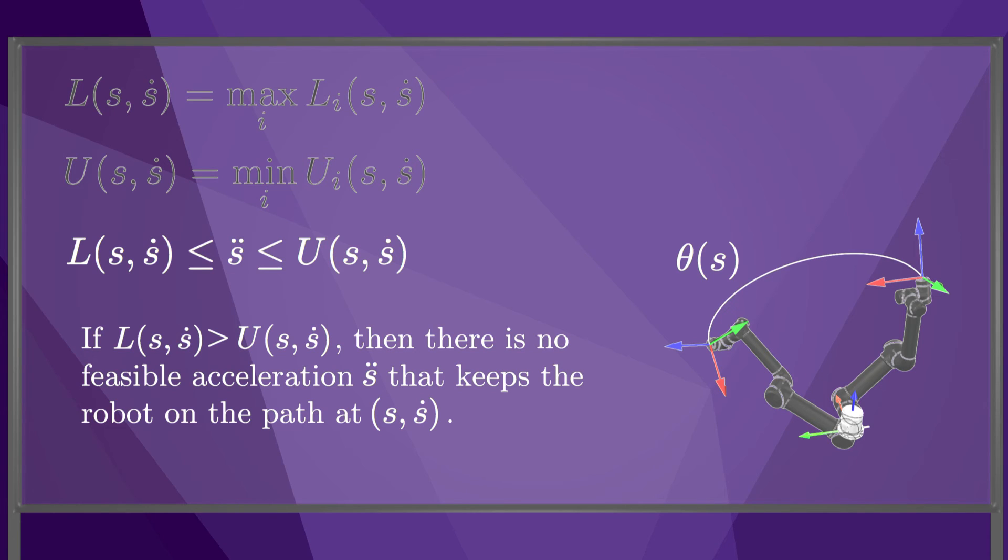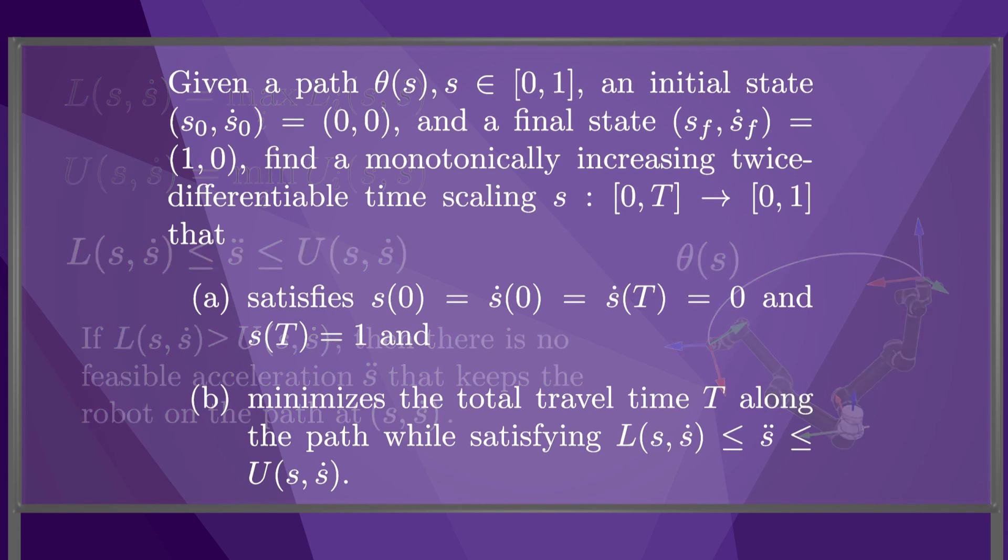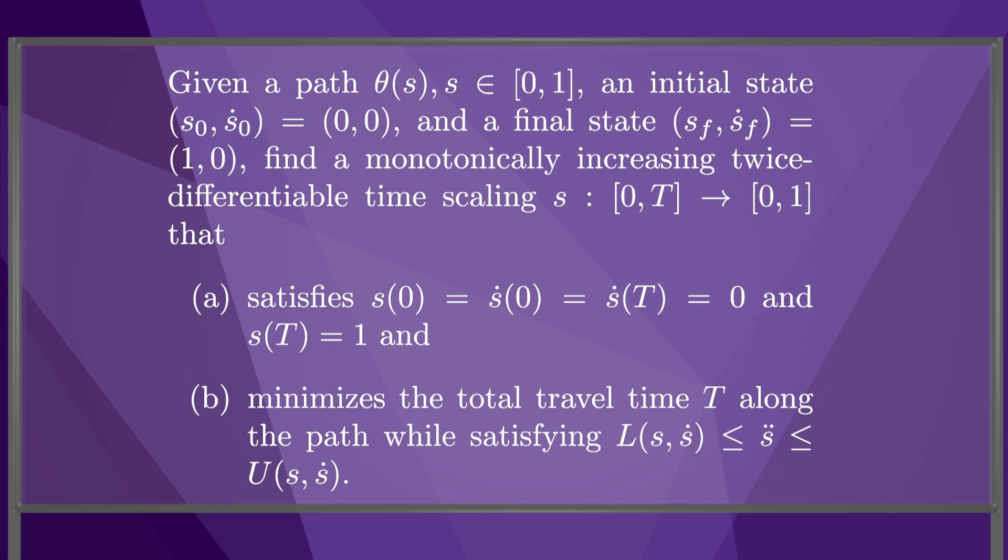Now that we've reduced the actuator constraints to s double dot is greater than L and less than U, we can mathematically express the time-optimal scaling problem as follows. Given a path theta of s, the initial state where both s and s dot are zero, and the final state where s is one and s dot is zero, we want to find a monotonically increasing twice-differentiable time-scaling that (a) satisfies the terminal conditions and (b) minimizes the total travel time T while satisfying the actuator constraints.